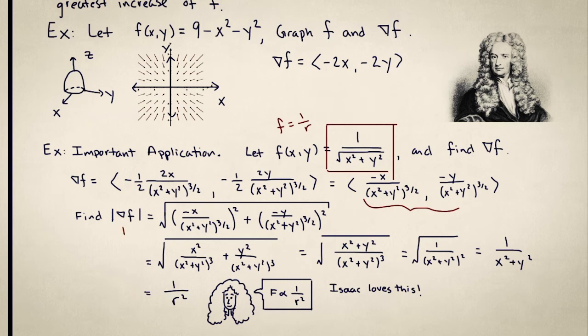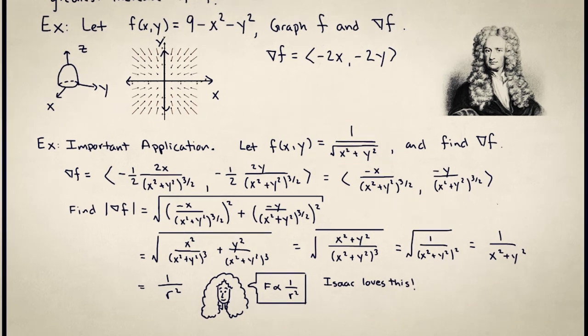And then just for fun we found the magnitude of this, and we turned out to actually get Newton's law of gravity. Right now the takeaway from this is just that you can have fun making up scalar valued functions and turning them into vector valued functions by taking the gradient.